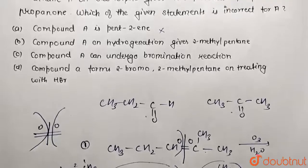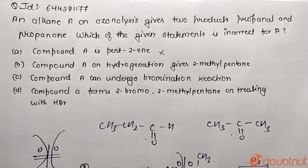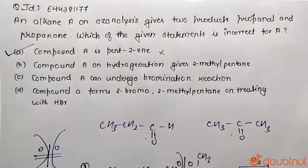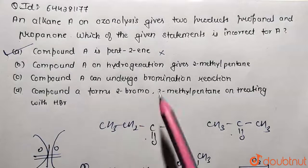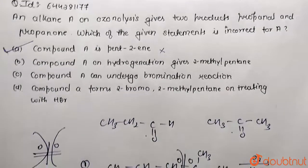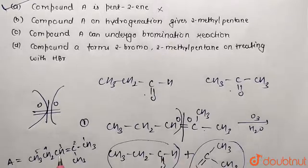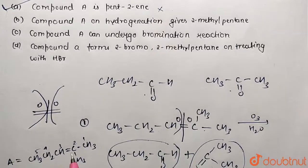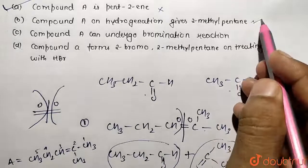So this is absolutely false, this is incorrect. We need to find the incorrect option in the given question. Option A is going to be the correct choice. Moreover, other options are obviously going to be correct because hydrogenation is going to give 2-methyl pentane, which we have already seen.